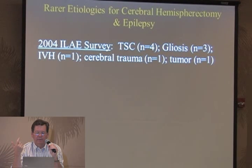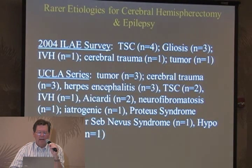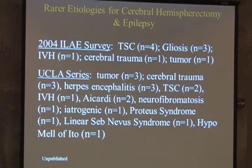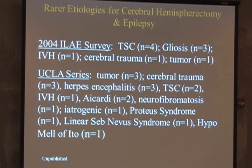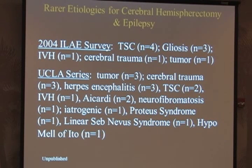For rare etiologies, the 2004 survey had four cases of tuberous sclerosis even with tubers on the other side, one case of intraventricular hemorrhage, one case of trauma history, and one case of tumor. In our series we're collecting more unusual types: up to four hemispherectomies for tumor - large enough that the only way to cure the tumor was to take out half the brain - plus trauma, several kids with herpes encephalitis, two with CARDI syndrome, neurofibromatosis, one case where a prior surgical procedure at another facility essentially destroyed the hemisphere, and unusual cases including Proteus syndrome, linear sebaceous nevus syndrome, and one case of hypomelanosis of Ito.